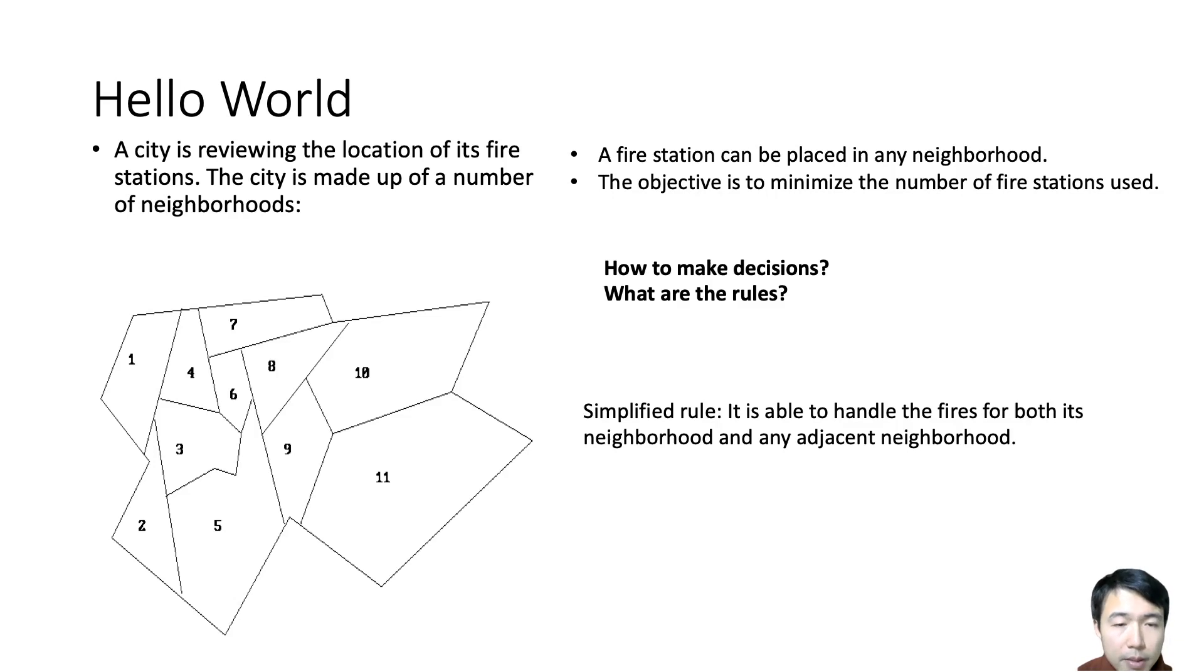But in this example, we just use a simplified rule: a fire station is able to handle the fires for both its neighborhood and any adjacent neighborhood. So as long as we have a fire station at neighborhood one, since two, three, four are adjacent to neighborhood one, we don't have to place a fire station in two, three, or four.